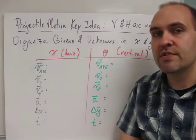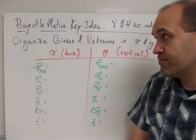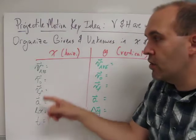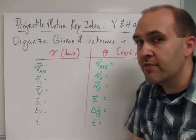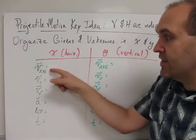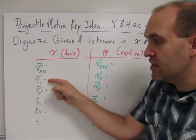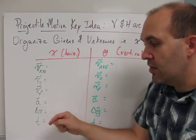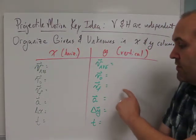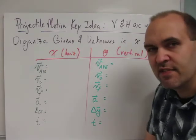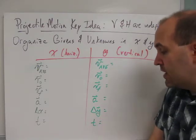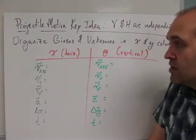Organize the givens and unknowns in an x and y chart. Everything that I might possibly know or want to know in the horizontal I've listed here. In the x I've listed average velocity, original velocity, final velocity, acceleration, displacement and time. I did the same thing in the y column: average, original, final velocity, acceleration, displacement (I use delta y instead of delta x because it's vertical), and then the time there at the bottom.